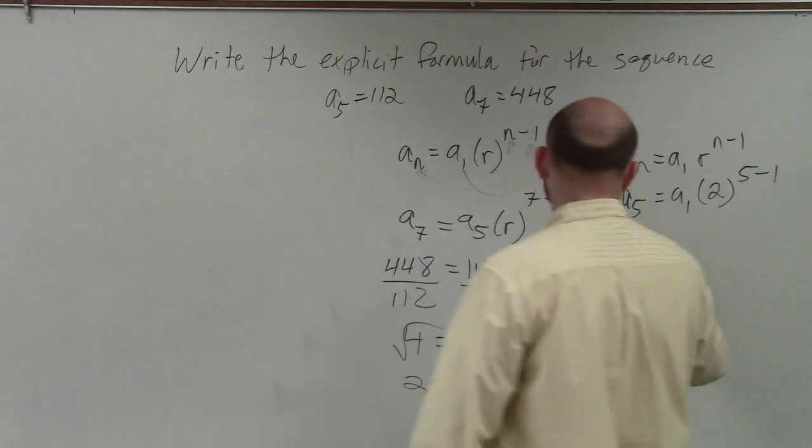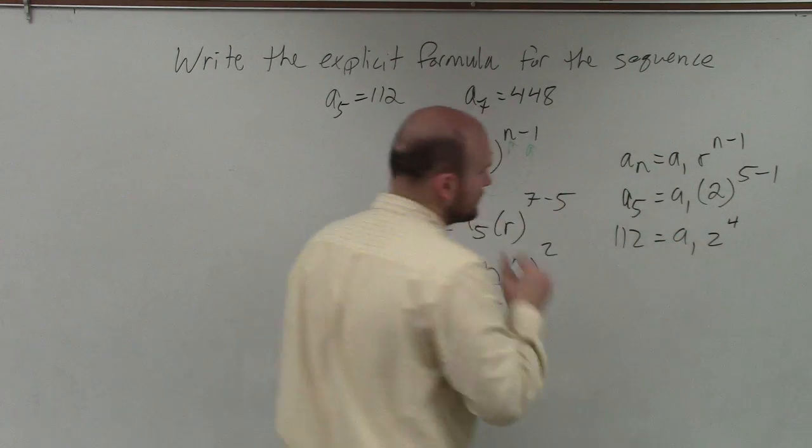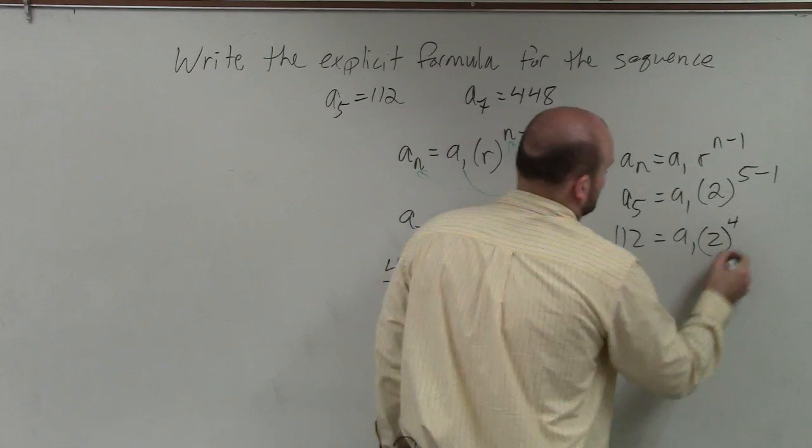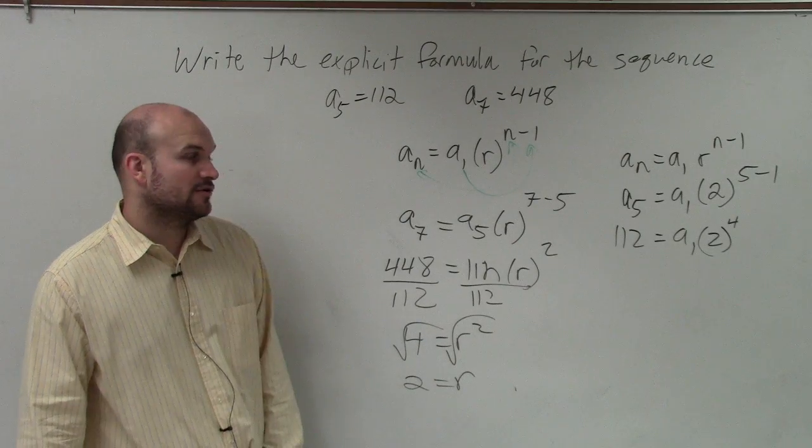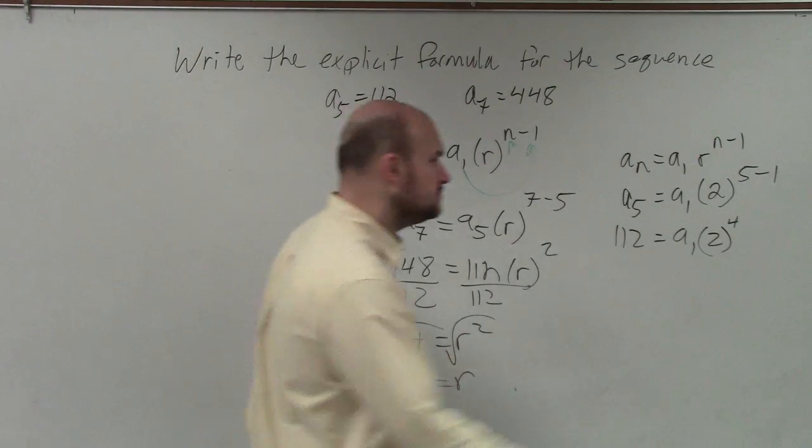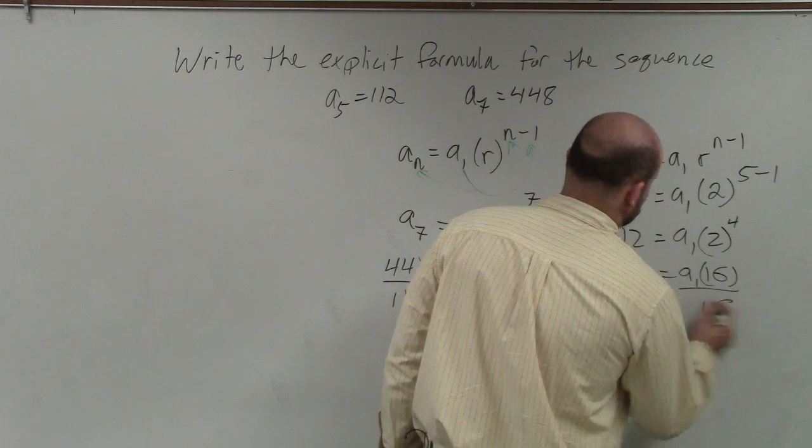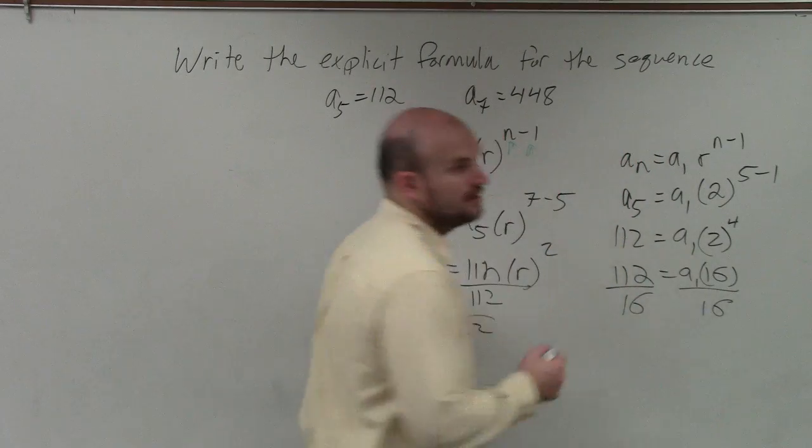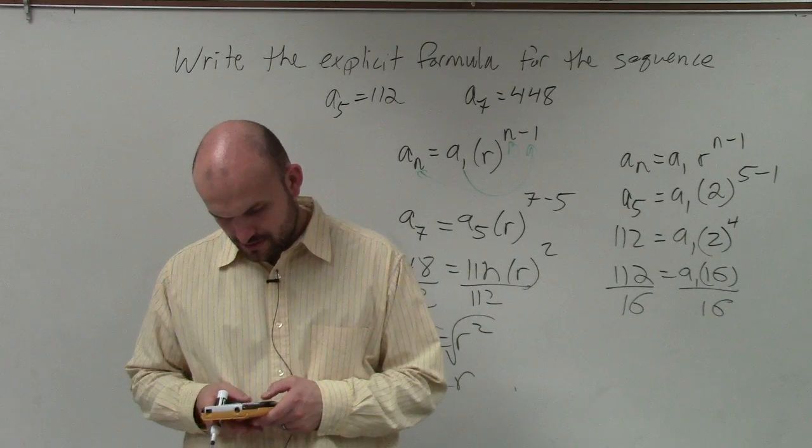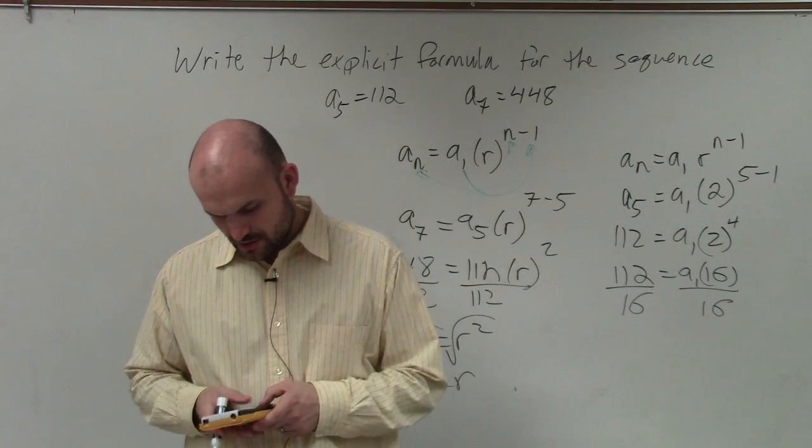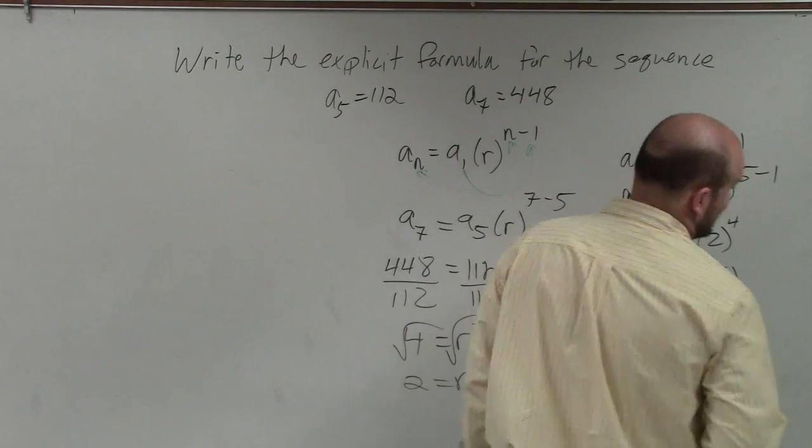Well, a_5 is 112. So 5 minus 1 is 4, so it's 2 to the fourth. 2 to the fourth power is 16. Divide by 16. 112 divided by 16 is... nobody got to that far. I don't want to do the work either. It's 7, I should have known that. So a_1 equals 7.